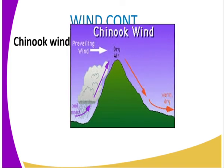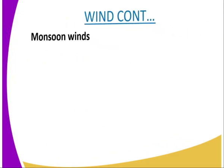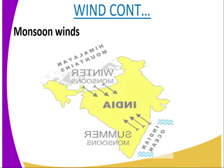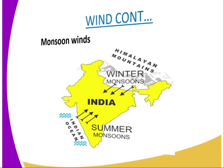Then we have the chinook winds. These blow from the area where we have the reef to the area where we have dry weather. Then we have the monsoon wind, which takes place during the winter and summer seasons. It occurs where we have the Himalayas and also where we have the Indian Ocean.